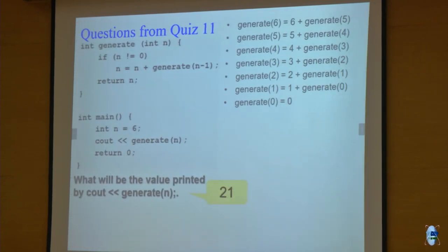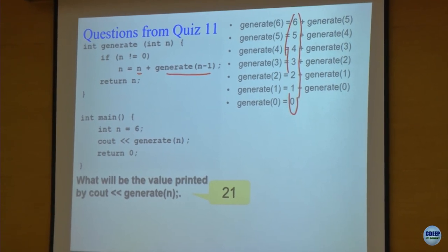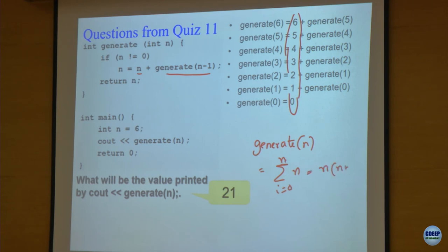The next question had a different definition of generate. Generate checks that n is non-zero and if non-zero it adds to n the value of generate(n-1). Working backwards, generate(6) is 6 plus generate(5), which is 5 plus generate(4), and so on. So it is basically the sum from 0 to 6. In general, generate(n) returns the sum from 0 to n, which is n*(n+1)/2. For n equals 6, you get 21.